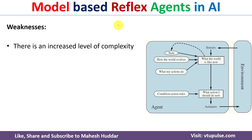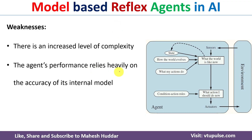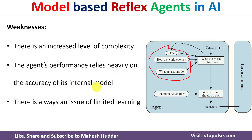The weaknesses include an increased level of complexity compared to simple reflex agent. The implementation of model-based reflex agent is definitely complex. The agent's performance relies heavily on the internal model and how it has learned over time. There is also an issue of limited learning, as there is no clear measurement of how well the agent has learned from its experiences.